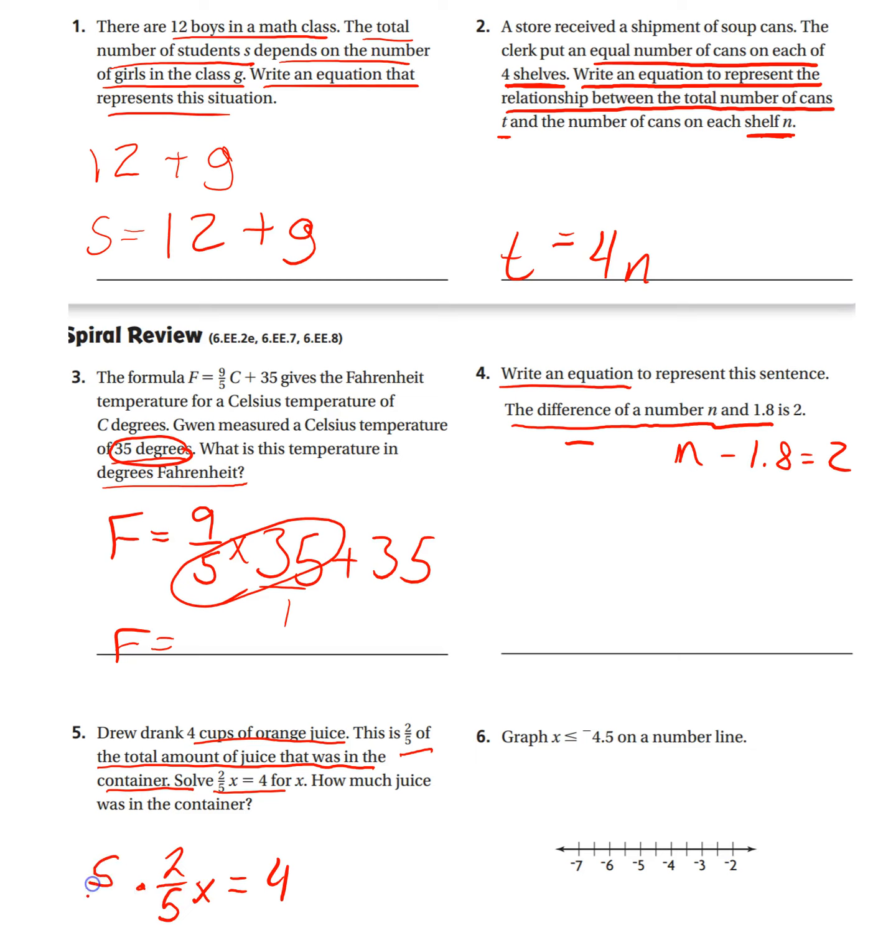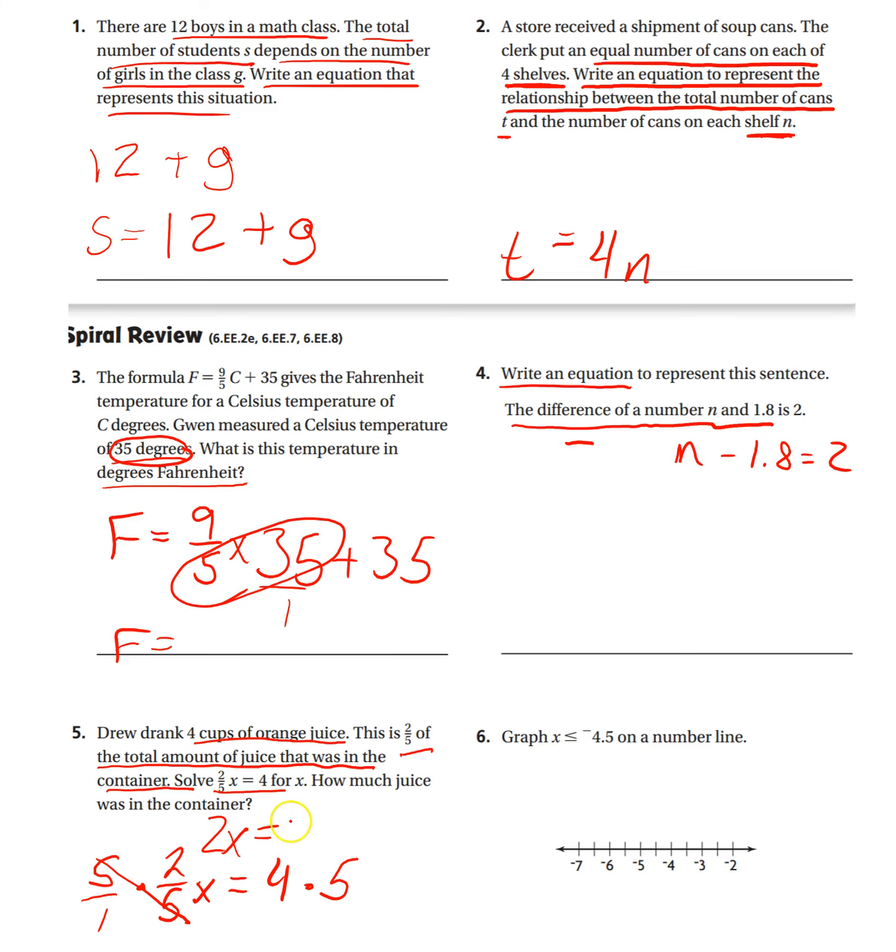And then you're left with, this cancels that out, leaving you with just 2X equals 20, and then I'll let you finish it from there.